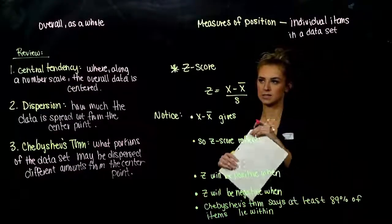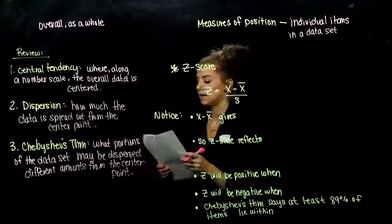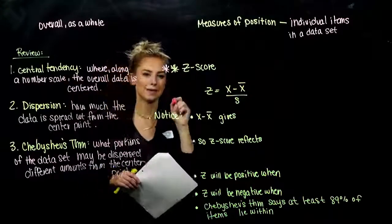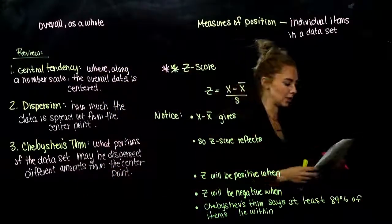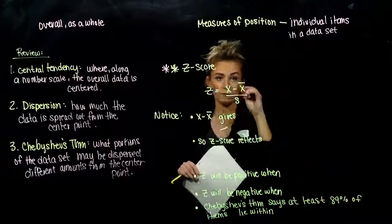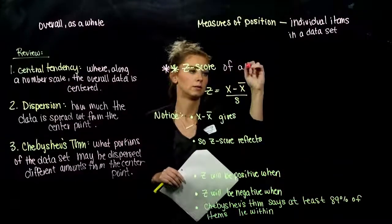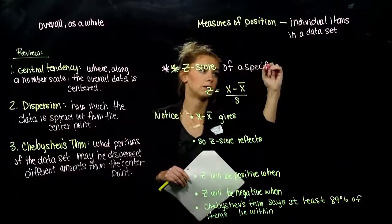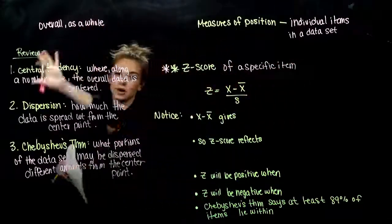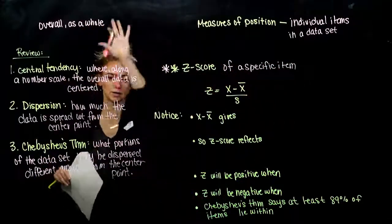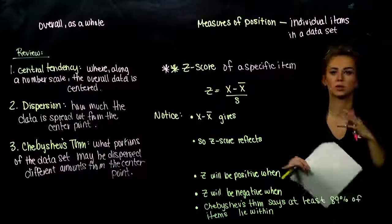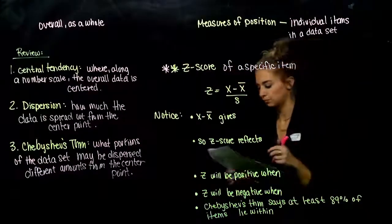That first one we're going to talk about is the Z-score, and it's very important. The Z-score is for a specific item — we're not looking grand scale as a whole anymore. We're zeroing in on one item: what is its position in the whole?